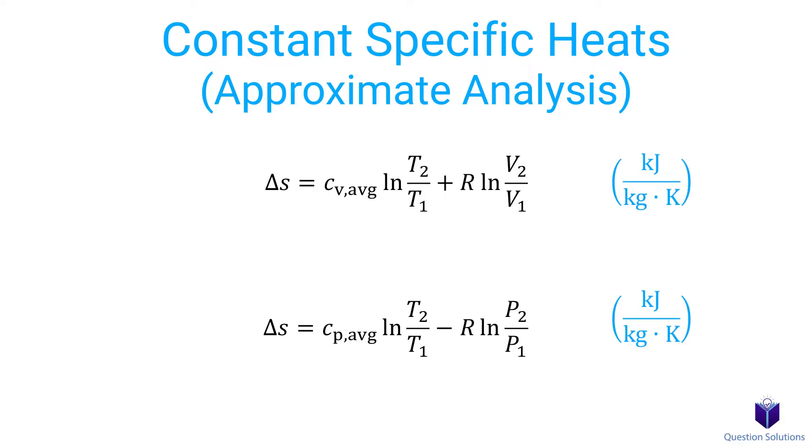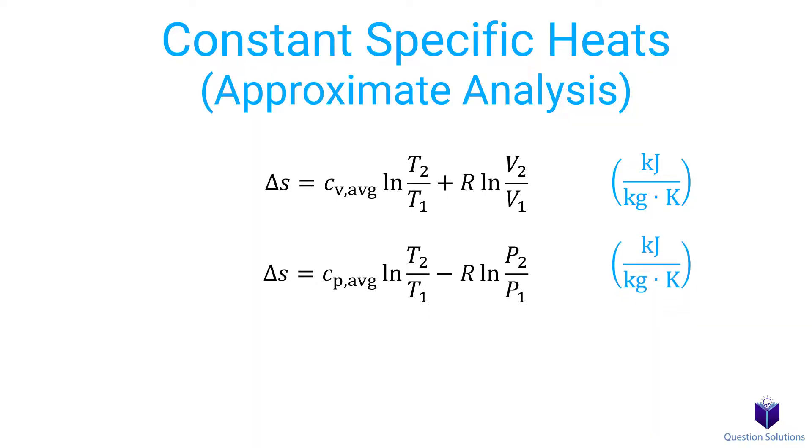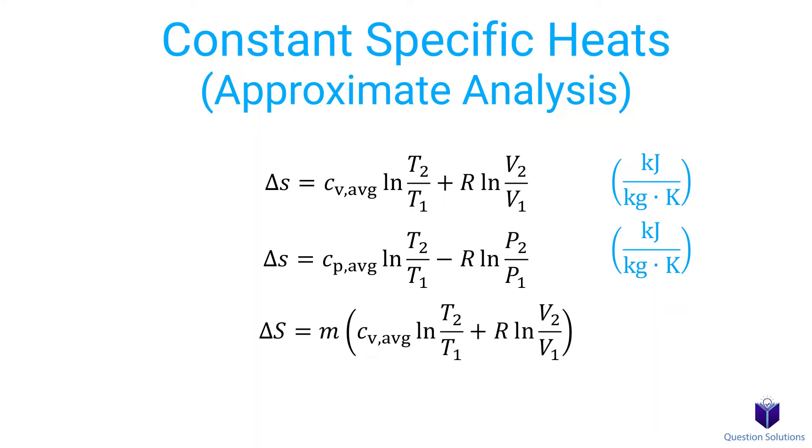The units for these equations are these. So you will notice this is per unit mass basis. If you want total entropy change, then we can multiply both sides by mass. So our equations look like this.